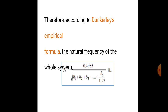Taking the reciprocal and the square root of 1/fn², we get that the natural frequency is equal to 0.4985 / √(δ1 + δ2 + δ3 + ... + δs / 1.27) in hertz. This is the final expression for the natural frequency using Dunkley's method.